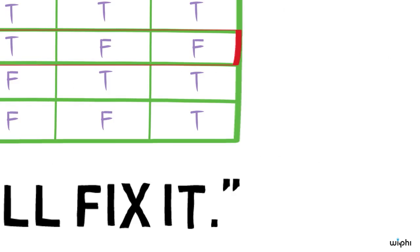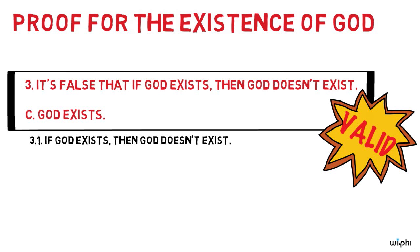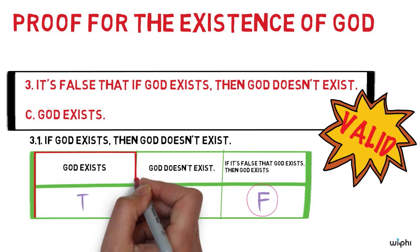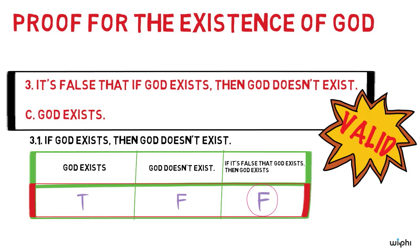Thus, according to this theory, the conditional embedded in three, if God exists, then God doesn't exist, is false only if God exists. That is because only in that case is its antecedent true and its consequent false. So on our material conditional theory, the premise entails that God exists.